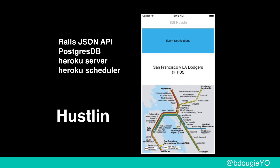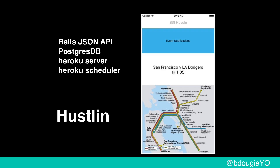This app originally started with a Rails JSON API. The beauty of this is that baseball happens every year, so I just rebuild the app every year with a new technology. I originally started with a Rails app, a Postgres database, and I used Heroku as my server because I knew how to use it — I was a Rails dev. It had a cron job scheduler to send notifications.